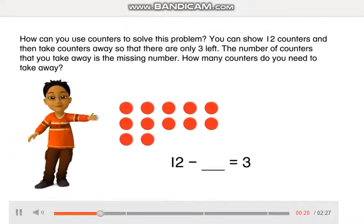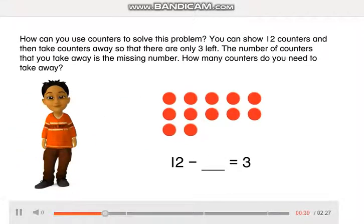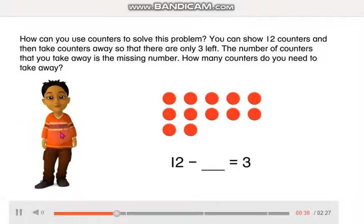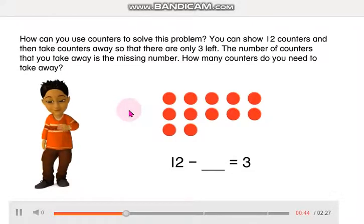How can you use counters to solve this problem? You can show 12 counters and then take counters away so that there are only 3 left. The number of counters that you take away is the missing number. How many counters do you need to take away?